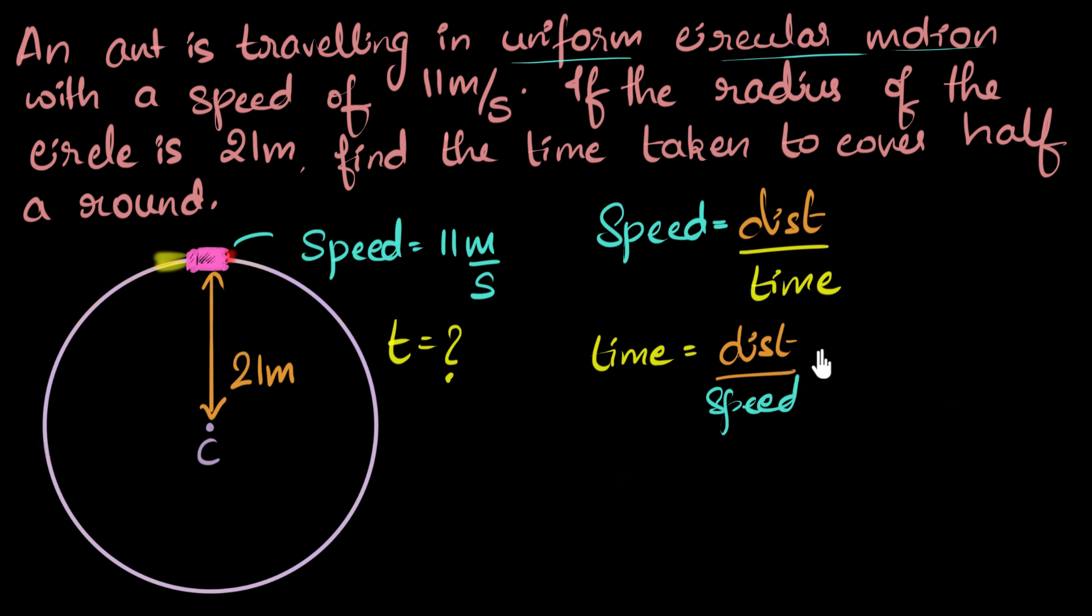All right. So if we substitute, what is the distance? Since we are only now concerned for half a round, the distance will be half the circumference. A full circumference is two pi r. So half the circumference will be just pi r. Divide by two. Two pi r is full circumference, so half of that is just pi r. Makes sense, right? Divide by speed, which is given as 11, 11 meters per second.